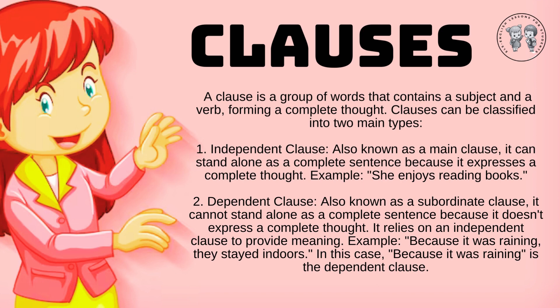2. Dependent clause, also known as a subordinate clause: it cannot stand alone as a complete sentence because it doesn't express a complete thought. It relies on an independent clause to provide meaning. Example: Because it was raining, they stayed indoors. In this case, 'because it was raining' is the dependent clause.